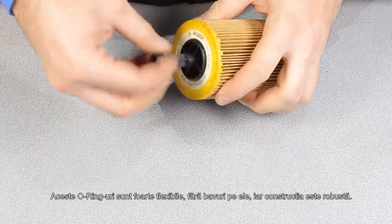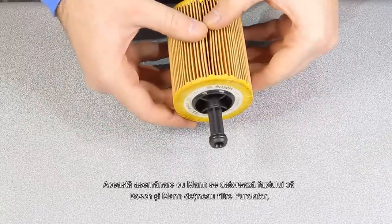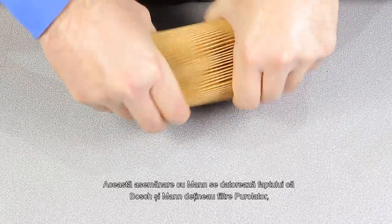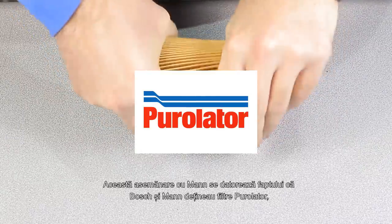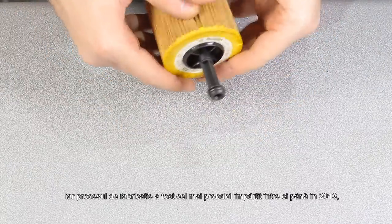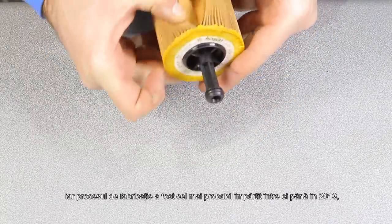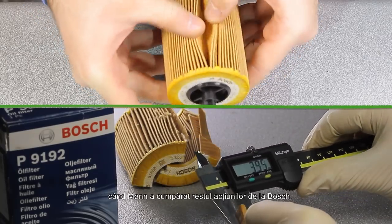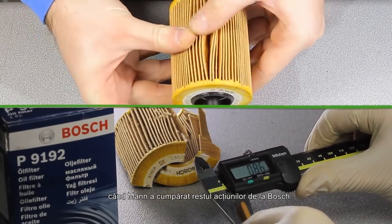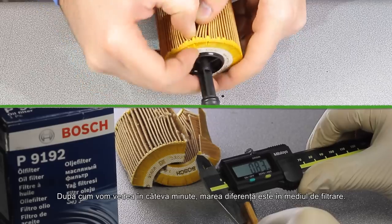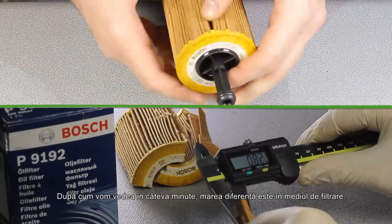These O-rings are very flexible with no burrs on them, and the build quality is very robust. This similarity with Mann is due to the fact that Bosch and Mann owned Purolator filters and the manufacturing process was most likely shared between them until 2013 when Mann bought the rest of the shares from Bosch. As we're gonna see in a few minutes, the big difference is in the media.